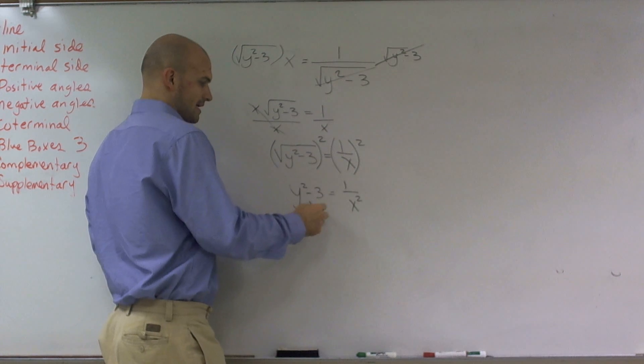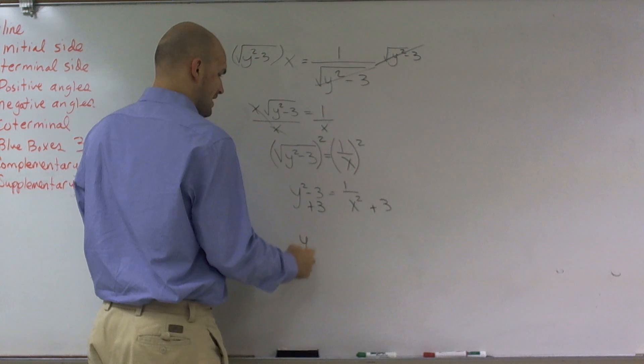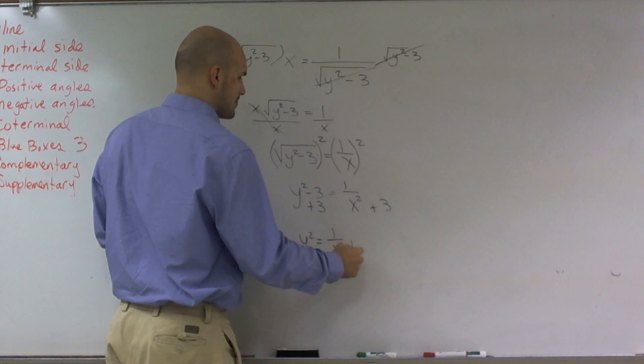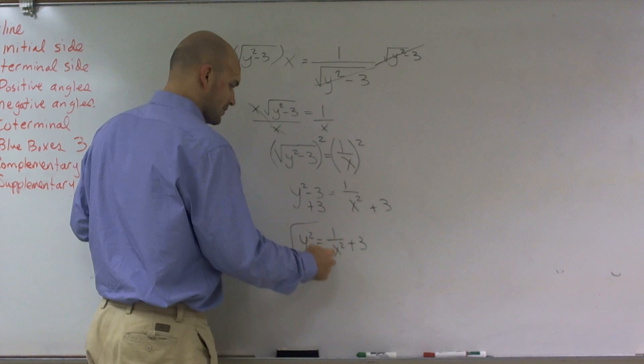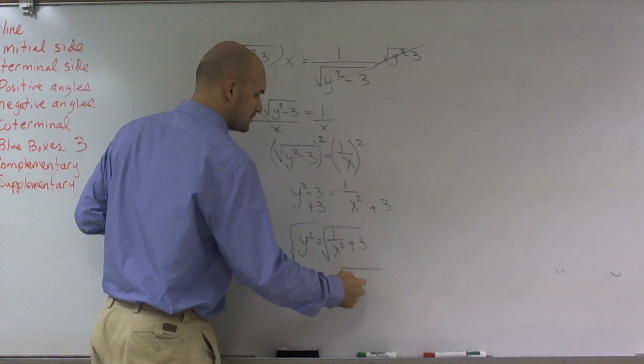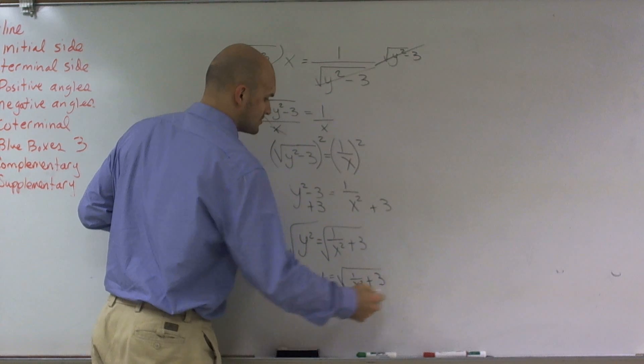Then from here, I'll add 3. So now I'm left with y² equals 1/x² plus 3. Then to get rid of the square, I'll take the square root. Therefore, y equals √(1/x² + 3).